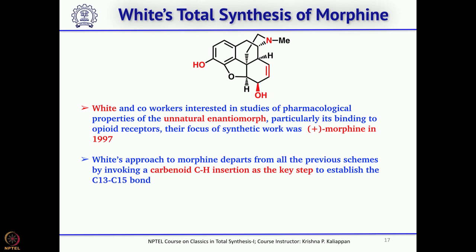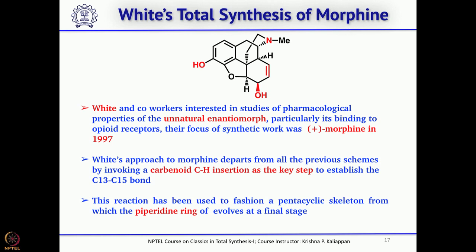That brings us to the fourth total synthesis of morphine, reported by James White. The earlier syntheses were racemic or asymmetric but synthesized naturally occurring morphine, whereas James White's group wanted to synthesize the enantiomer of naturally occurring morphine — that is, plus morphine. The key step in White's total synthesis is the intramolecular carbenoid C-H insertion, a clever use of rhodium acetate catalysis.